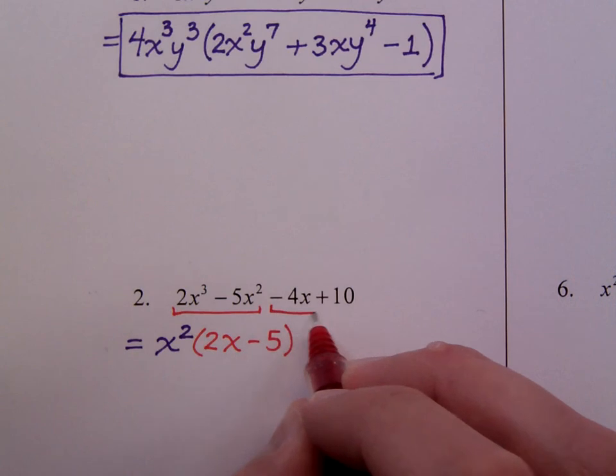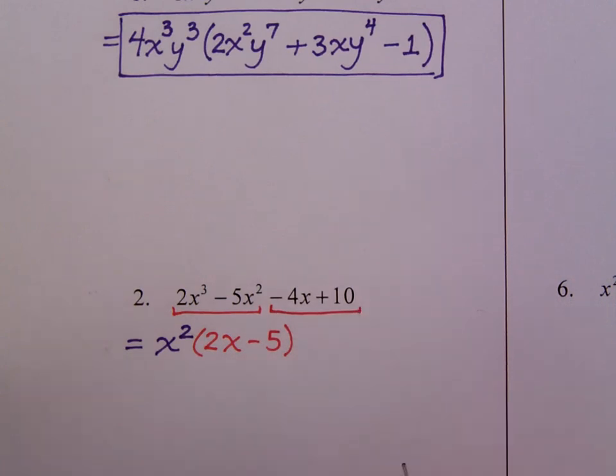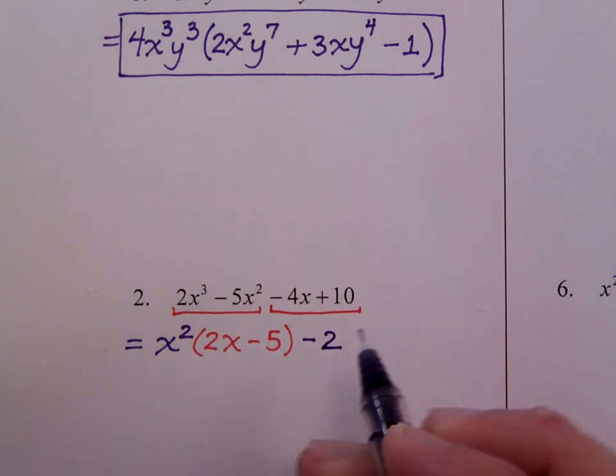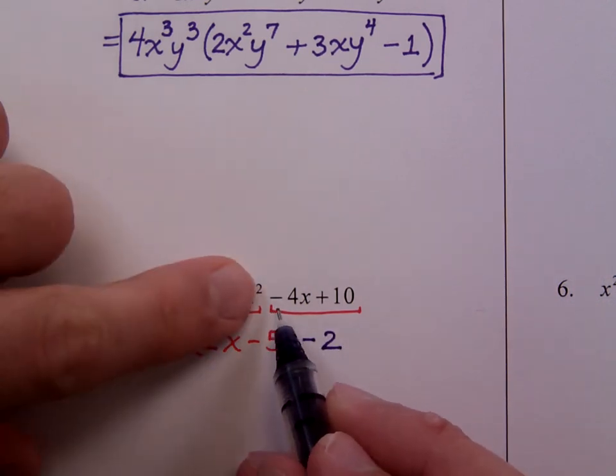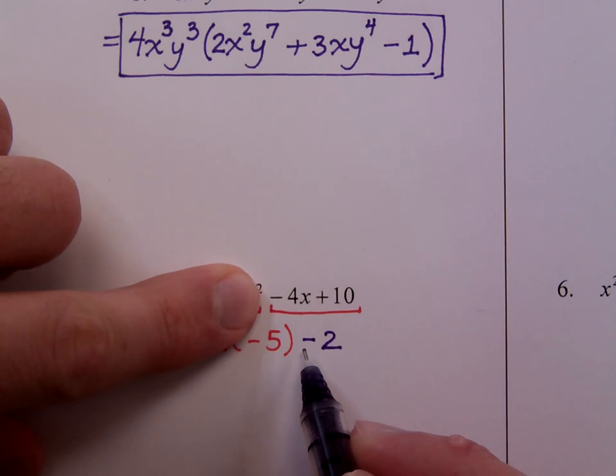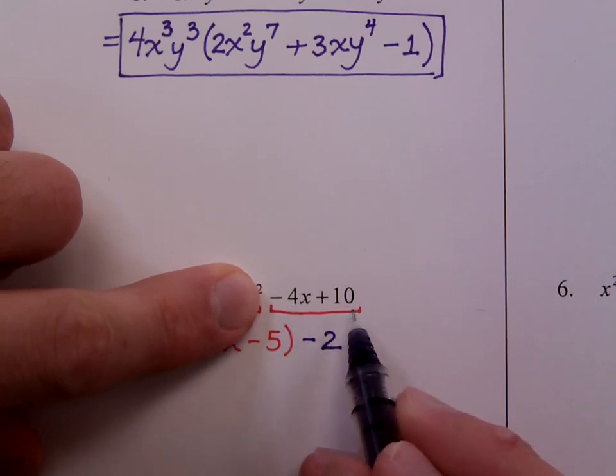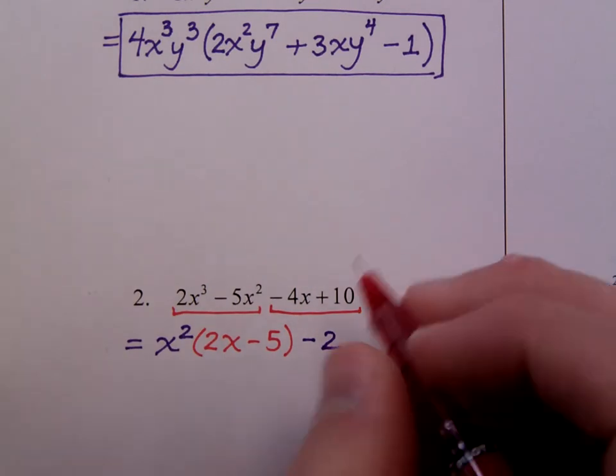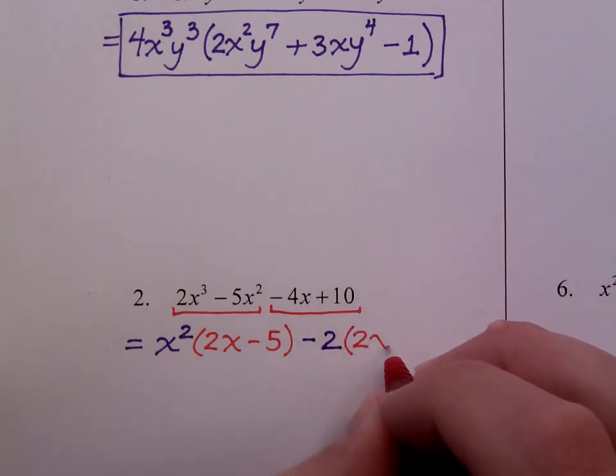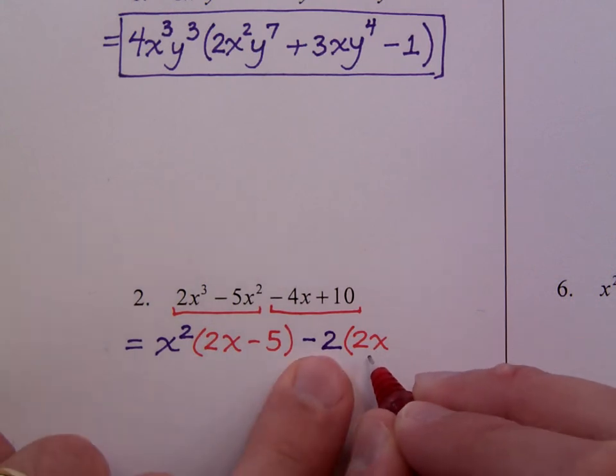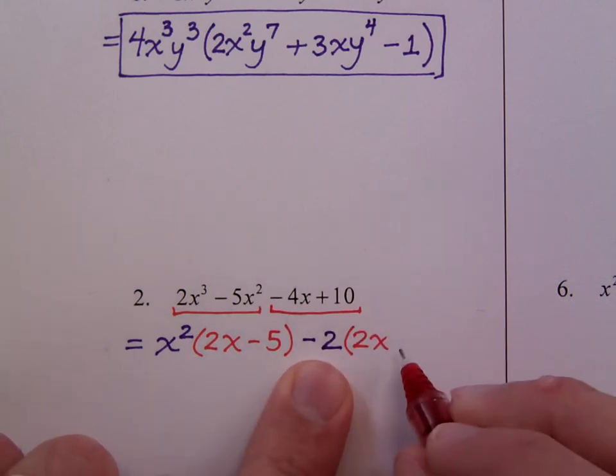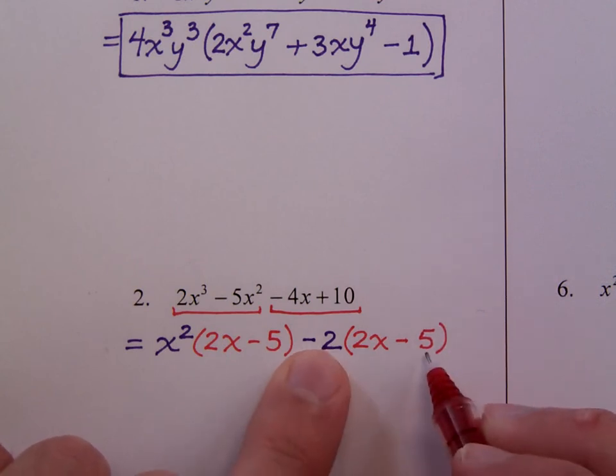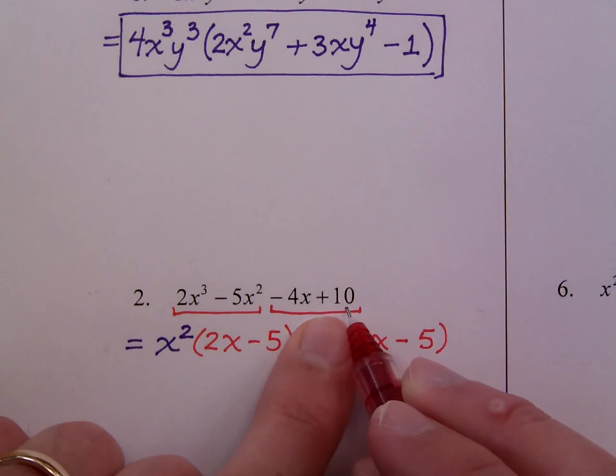In the second group which contains negative 4x plus 10, the common factor here is a negative 2. See whatever you lead off with right here is the sign that needs to go up in front here which is a minus. And then 2 is the common factor between these two terms. So if factor out a negative 2 or divide out that negative 2, you'd be left with a positive 2x. You see how you multiply this to get negative 4x? And then you would have a negative 5. And again, just a few moments to check this. Negative 2 times negative 5 gives you a positive 10.